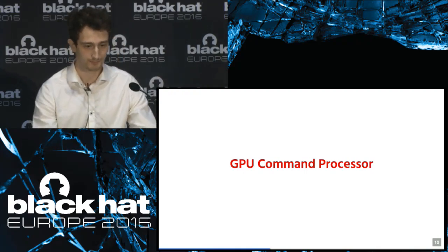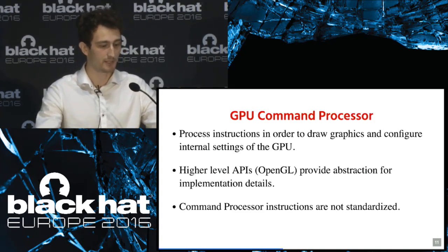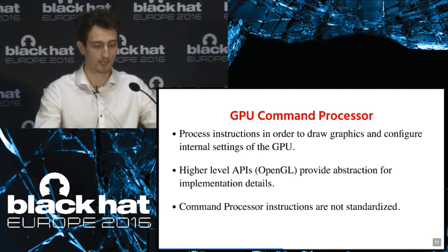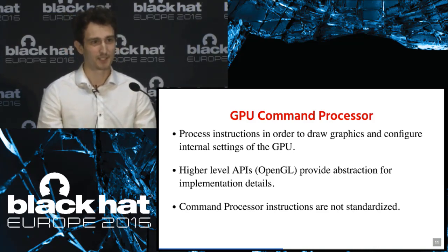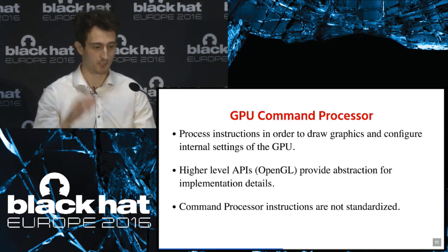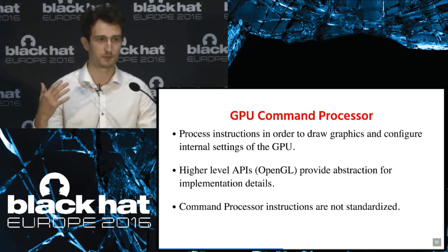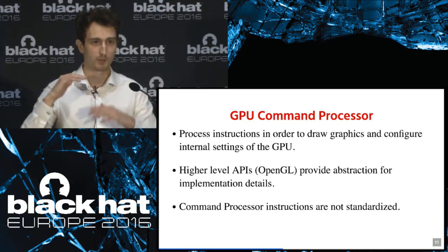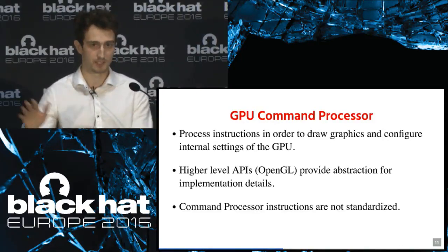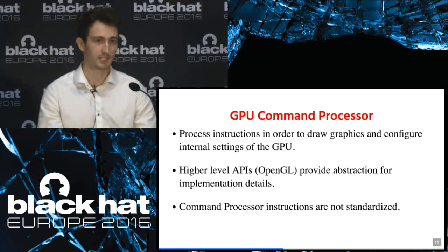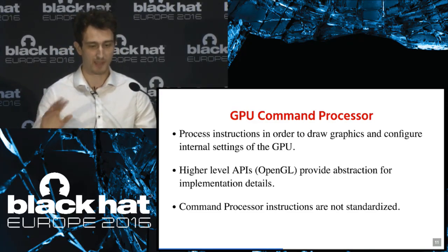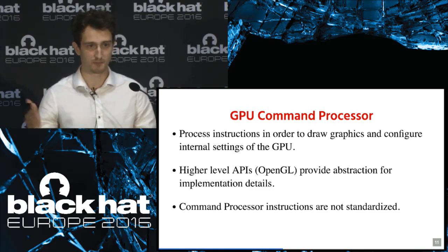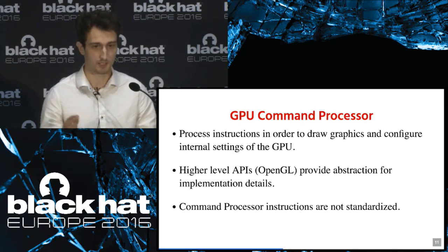Let's talk about the GPU command processor and what it is. The GPU command processor processes instructions in order to draw graphics and configure internal settings of the GPU. Higher-level APIs such as OpenGL provide an abstraction for implementation details. OpenGL has something called a user-mode driver, which contains vendor-specific code to generate these instructions for the command processor. So whenever you say 'draw a rectangle on screen,' the user-mode driver creates a bunch of instructions for the GPU and sends them to the driver to process. These command processor instructions are not standardized — GPU manufacturers can decide whatever types of instructions they want to provide.